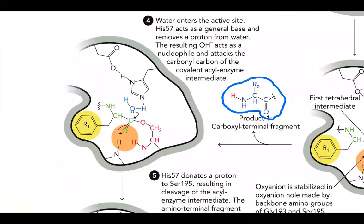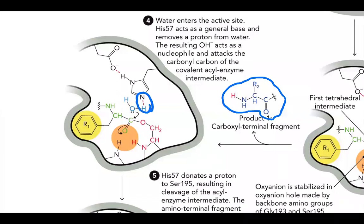Now that the first fragment gets kicked out, there's a space there, so water can enter our active site. When water enters, His-57 is going to act as a general base — it's going to remove a proton from that water. So now we have an OH⁻, and the OH⁻ is going to act as a nucleophile and attack the carbonyl carbon of our covalent intermediate.